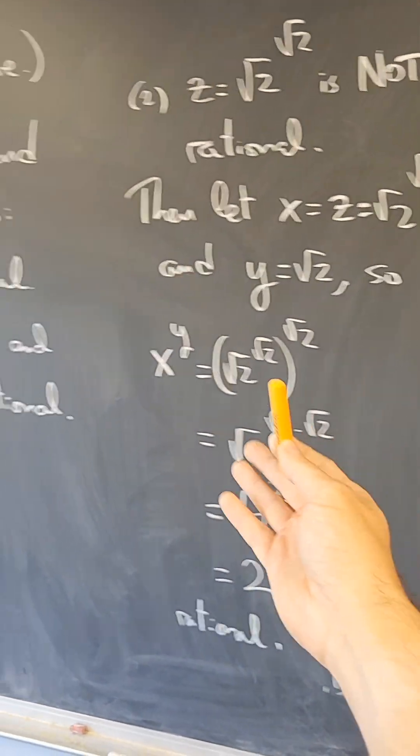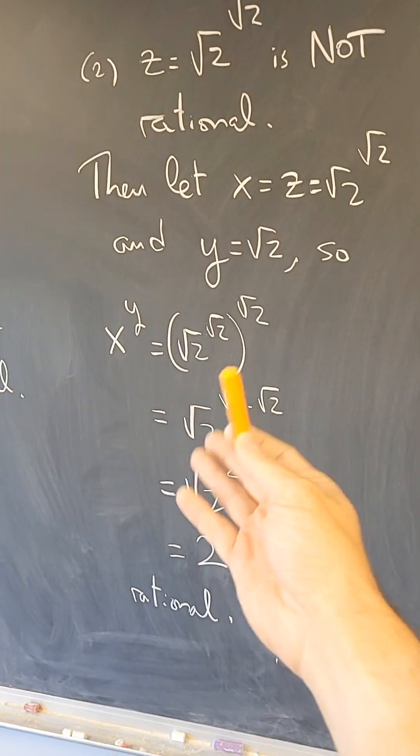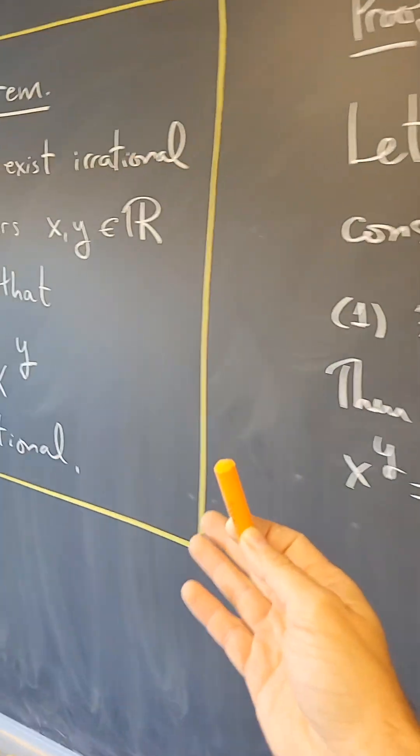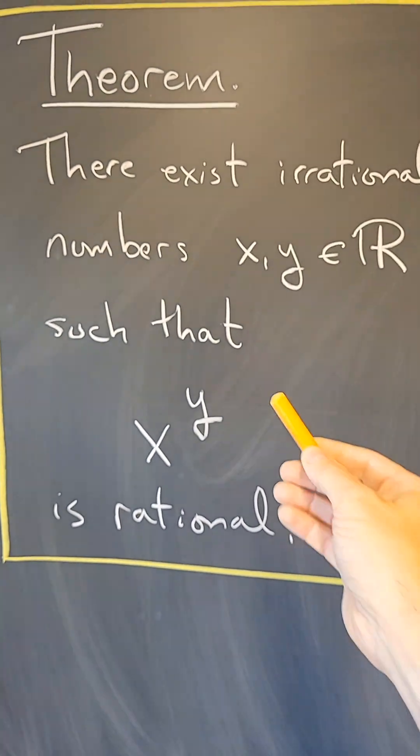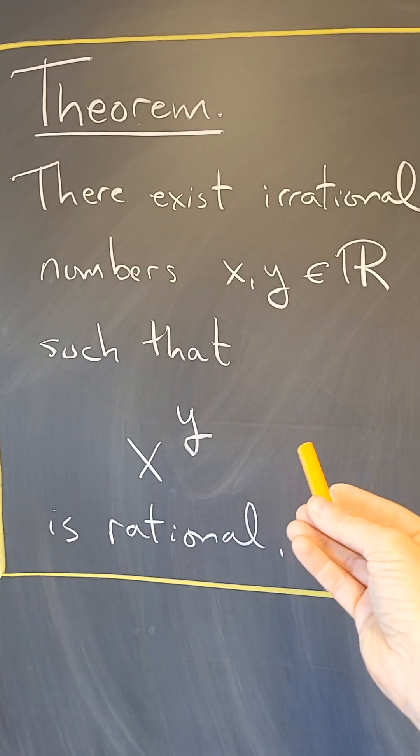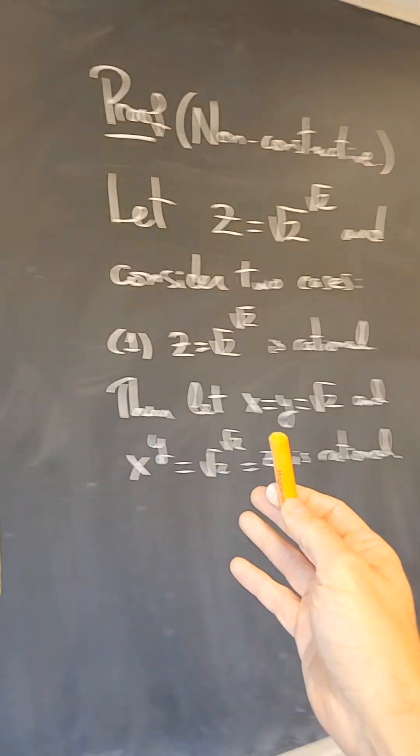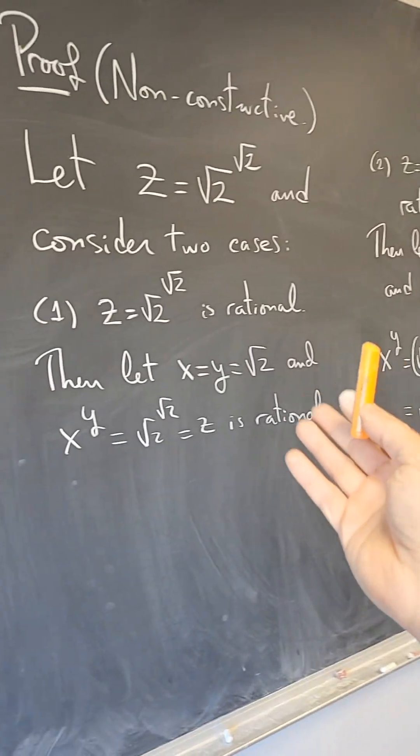Except that it's non-constructive because I am not telling you what's right. Is it this that is right? Or is that right? But it doesn't matter because in either case, there are x and y. And the theorem doesn't say, show me the x and the y. It just says that they exist. So yes, they exist. But the proof doesn't tell you what's what.